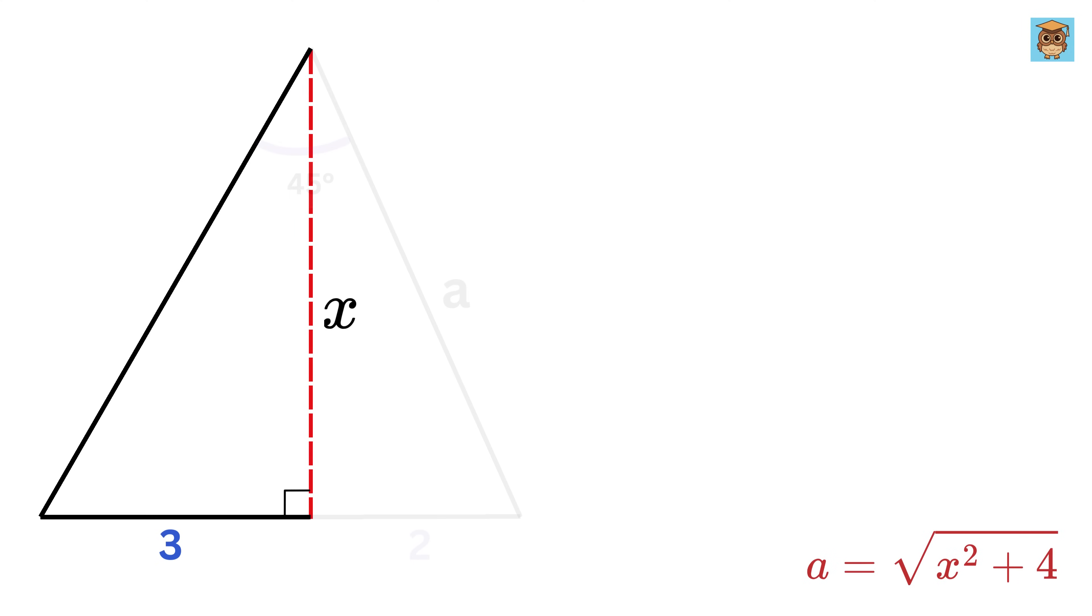Now consider this right triangle. Let this hypotenuse be of length b. So we get b squared equals x squared plus 3 squared or 9. So b equals the square root of this.